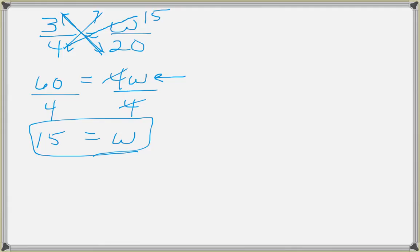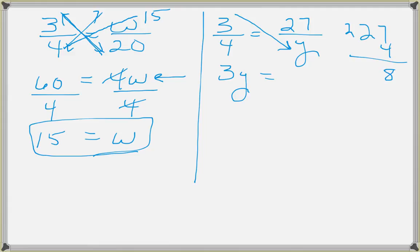So let's look at the next one. 3 over 4 equals 27 over y. And I can go in any direction, so I can say 3 times y is 3y, and 4 times 27, you can use your calculator if you want to, is 108. And then we divide both sides by 3. So 3 into 108 goes 36. The 3s cancel, and y is equal to 36.